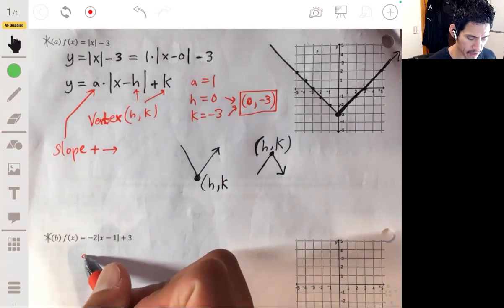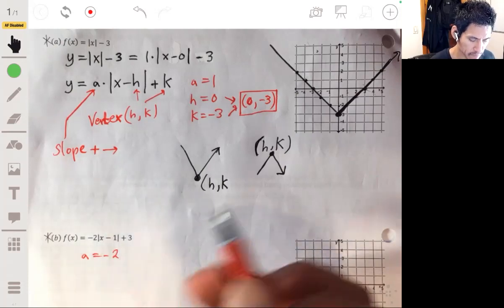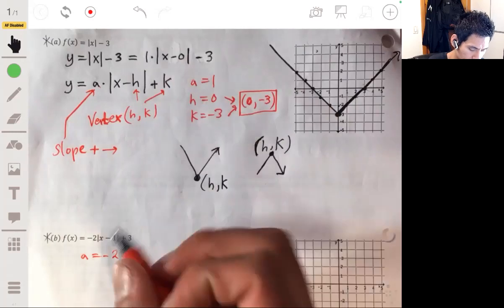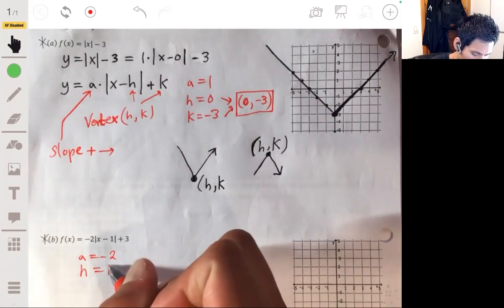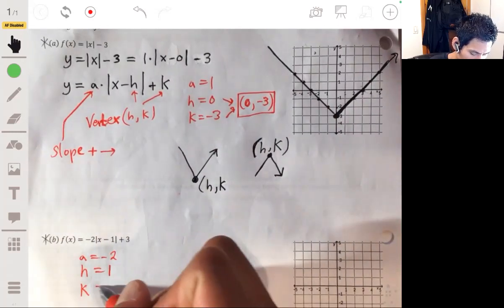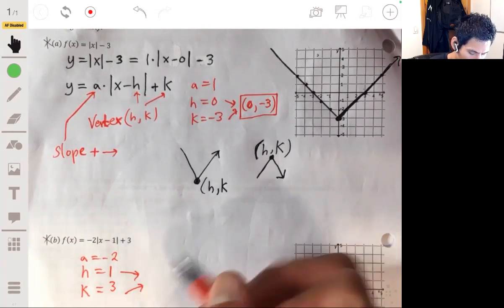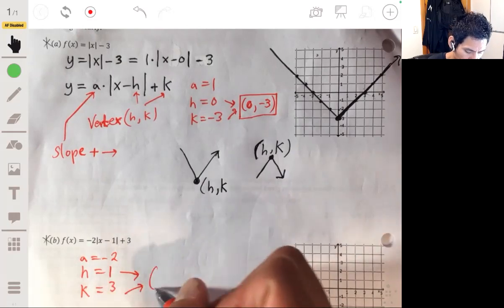So here we go. So the a is going to be negative two. Remember, this h is one, and then k is three.